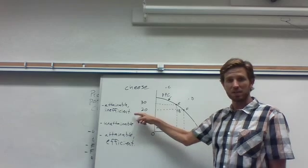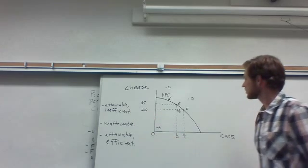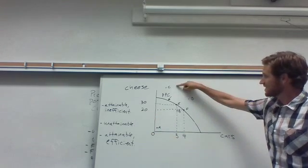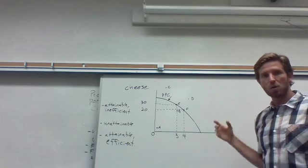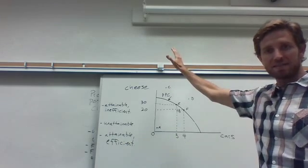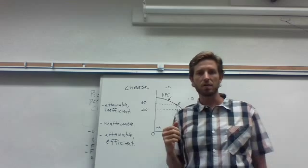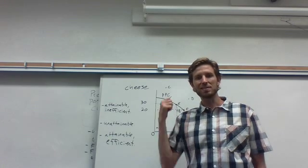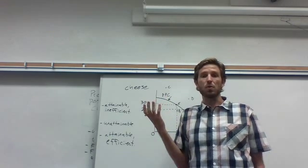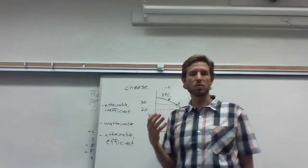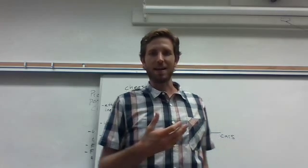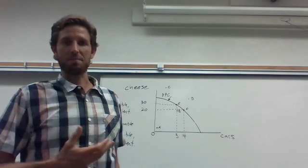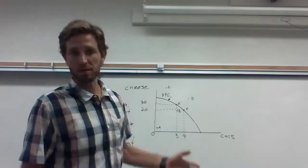And furthermore, it's inefficient. Points C and D, take note that those are above and beyond past the production possibilities curve. The interpretation of these types of points is that they're unattainable. Meaning it's impossible to make that much cheese and that many cars at the same time. So it's beyond our limit. That's pretty straightforward.